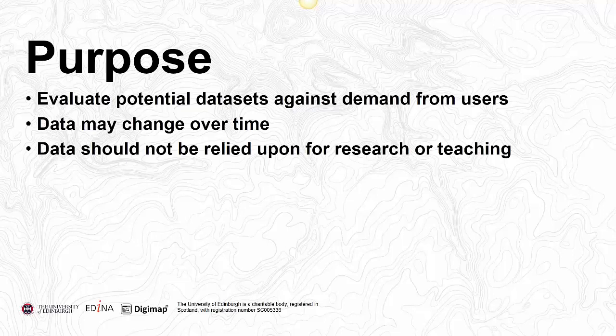Be aware that the data will change over time. The current datasets are available until the end of July — our license allows us to use this information up to the end of the current academic year. After that, they will come out and other datasets will go in. If you're doing research that extends beyond July, you shouldn't rely on these datasets being available beyond that date. If you need the data beyond that, get in touch via the Digimap help desk and we will advise accordingly.